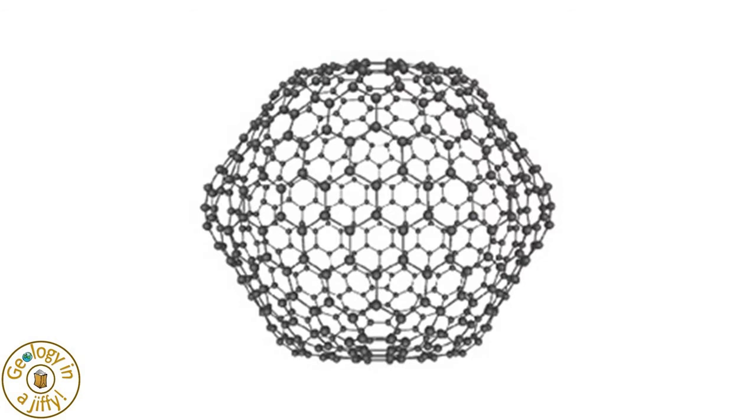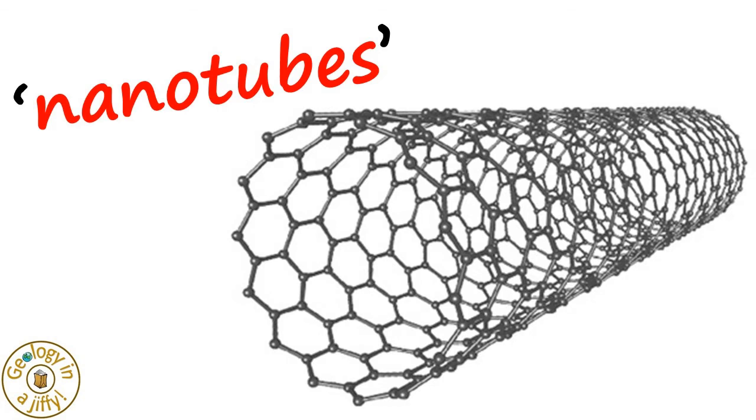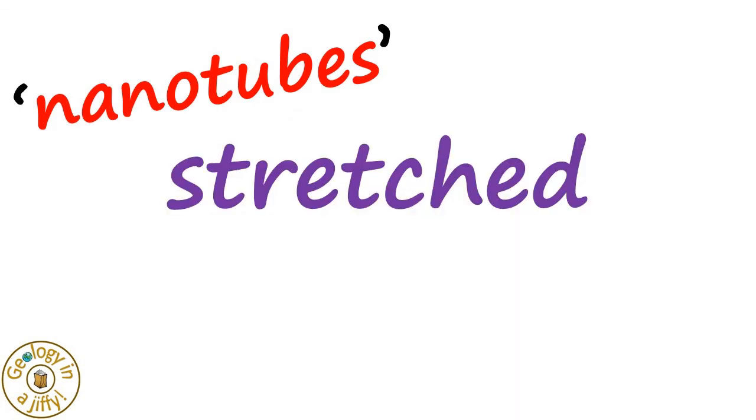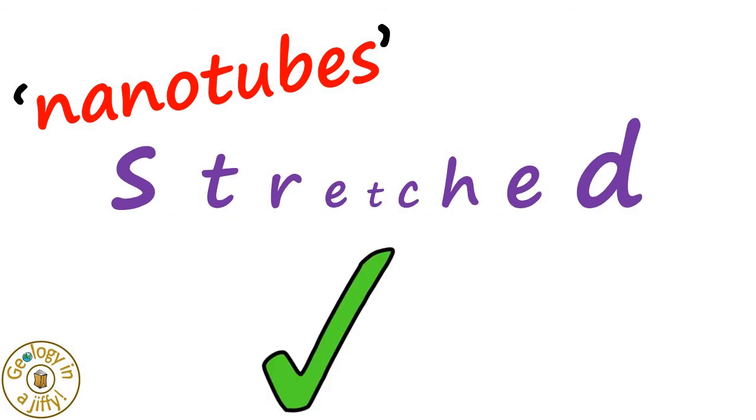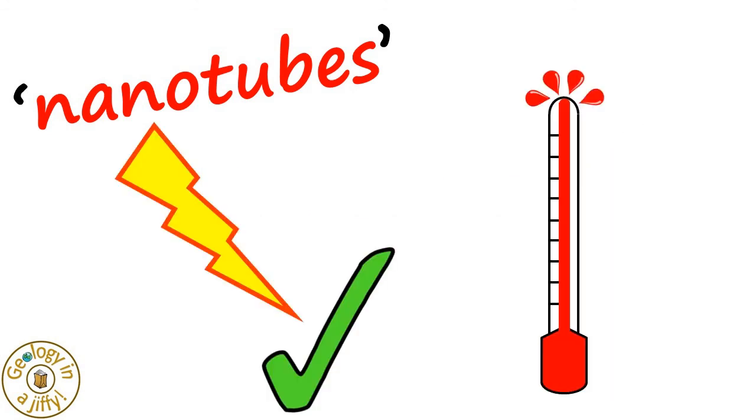Ultimately, fullerenes can be very elongated. So elongated they form what are known as nanotubes, very long but very thin cylindrical nanomolecules. Nanotubes are strong when stretched, and very good conductors of electricity and heat.